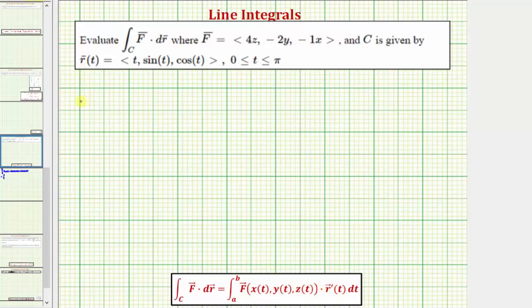So let's first find F of (x(T), y(T), z(T)). Notice that x(T) equals T, y(T) equals sine T, and z(T) equals cosine T.